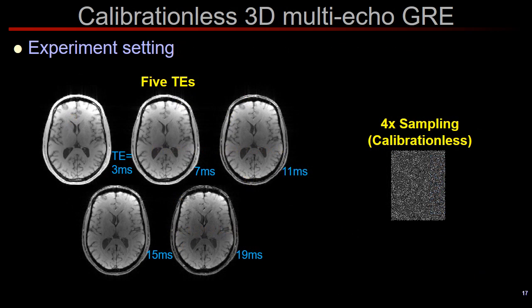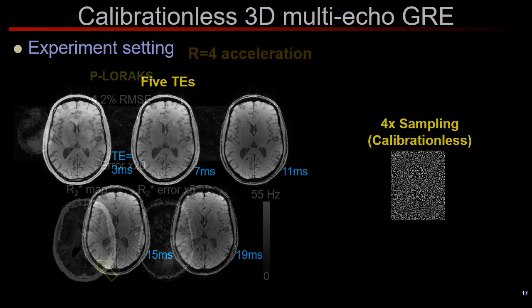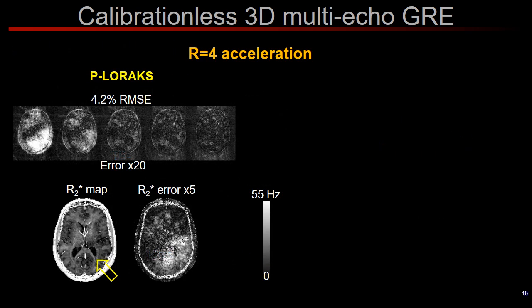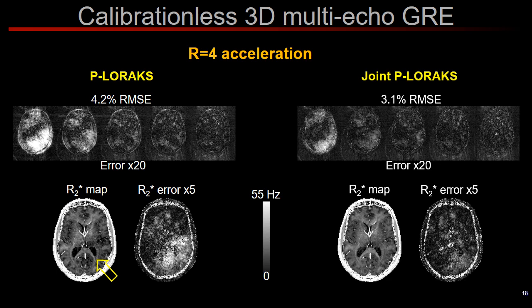Finally, we consider a 3D multi-echo GRE reconstruction with 5 echoes but without any calibration region in our sampling pattern. At 4-fold acceleration, calibration-less LORAX already provided decent reconstruction, but the T2* map derived from the individual echo images suffered from some bias. With Joint calibration-less LORAX, we were able to improve the reconstruction quality and mitigate the bias in the T2* fit.